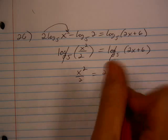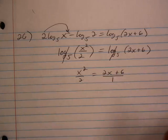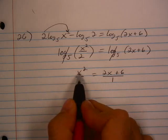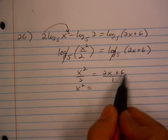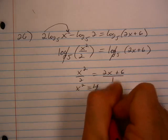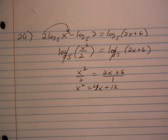We don't like the fraction, so what I'm going to do is I'm going to put this over 1, and I'm just going to cross multiply here. x squared times 1, that's x squared. 2 times all of this becomes 4x plus 12.